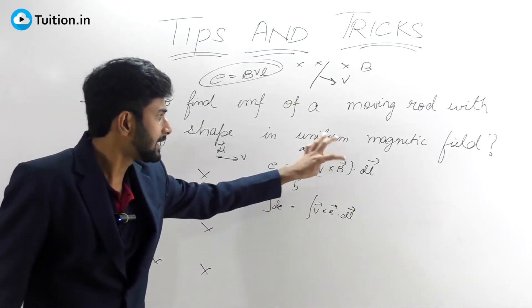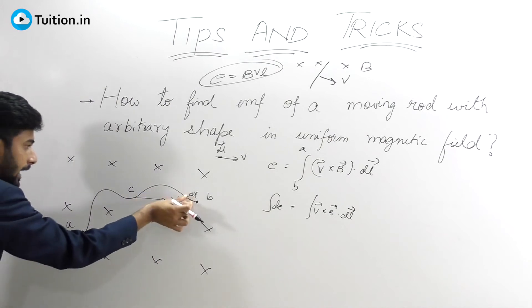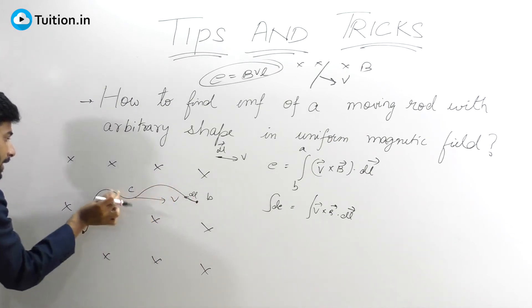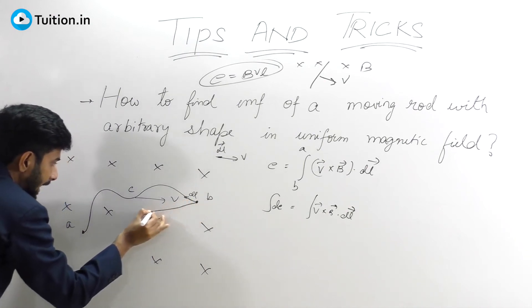Now this expression gives us an idea of what to do. If you integrate it vectorally—if you take all these DL vectors and integrate them—you will get this line which joins A and B.